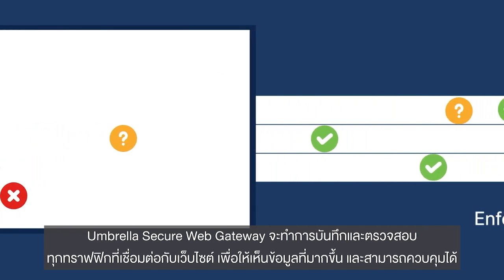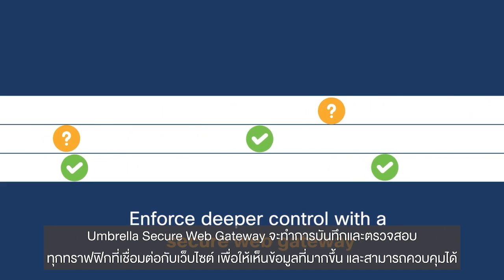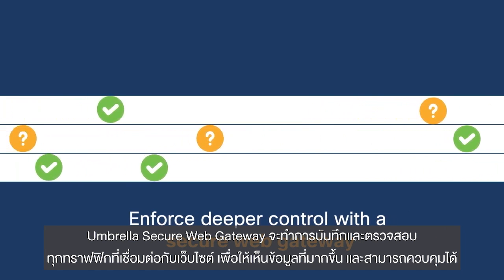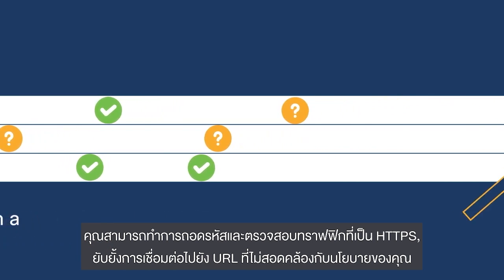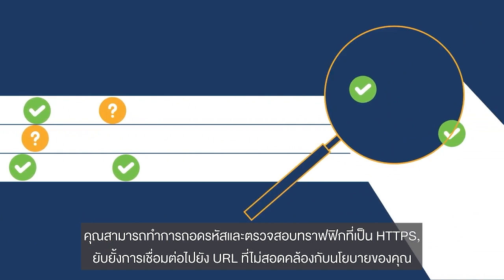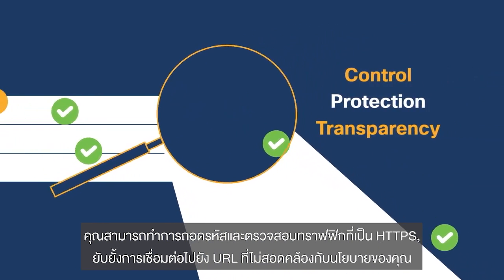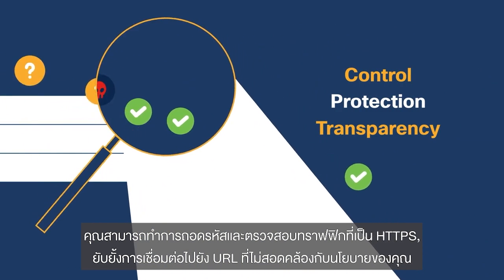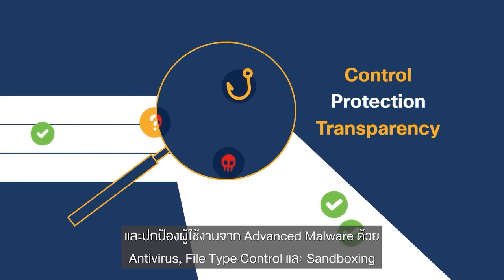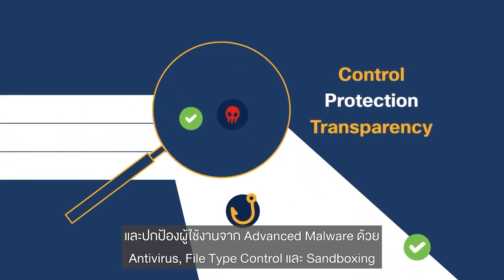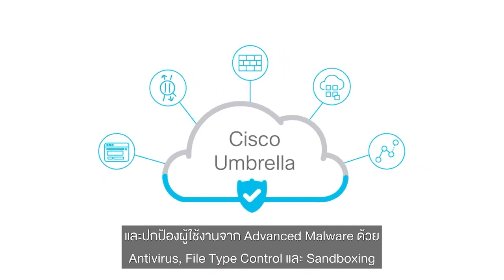Umbrella's Secure Web Gateway logs and inspects all web traffic for greater transparency and control. You can decrypt and inspect HTTPS traffic, block specific URLs that violate policies, and protect against advanced malware with antivirus detection, file type controls, and sandboxing.